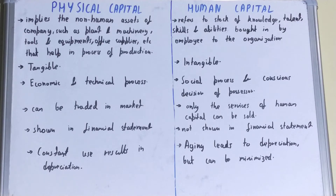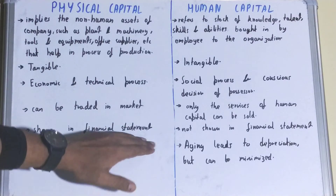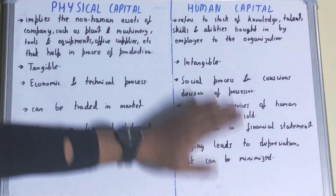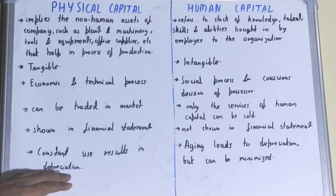Next, in terms of where it is shown, physical capital is shown in the financial statements of the company, but human capital is not shown in the financial statements of the company.